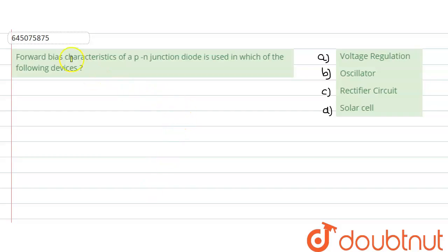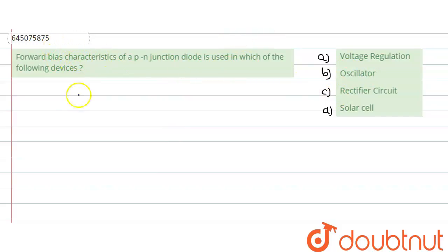In this question, what is given is that the forward bias characteristics of a PN junction diode is used in which of the following devices. There are several devices given and we need to tell in which one the forward bias characteristic is used. In option A, it is given as voltage regulation.